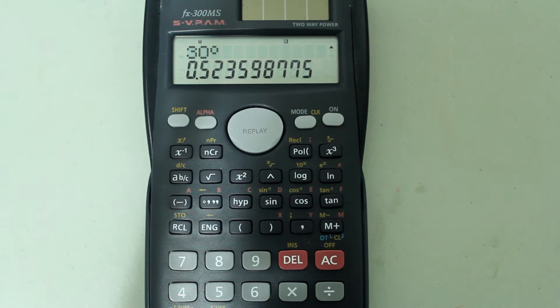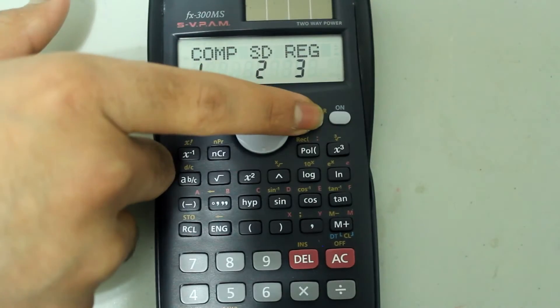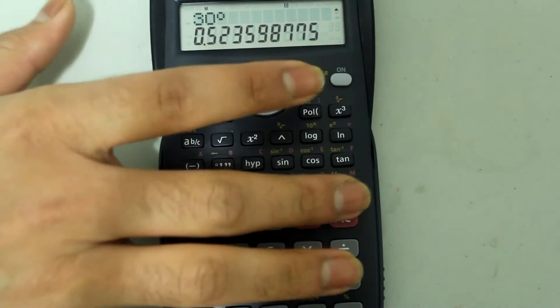And now if you wanted to go from radians to degrees, you need to be in degrees mode. So, press mode, and press 1 on the number pad, and now we are in degree mode, let's clear this out.